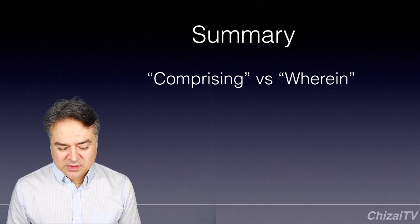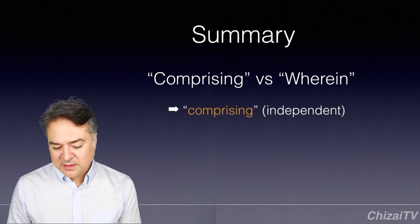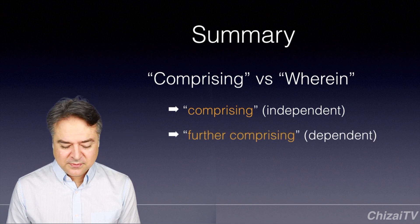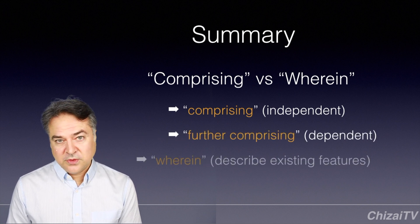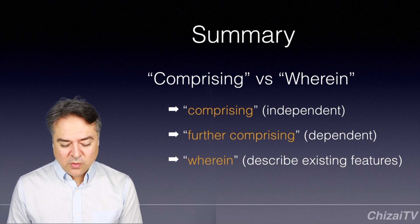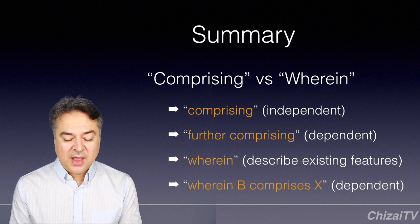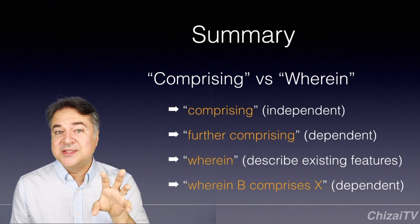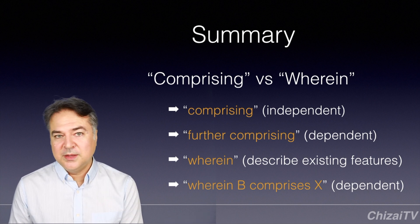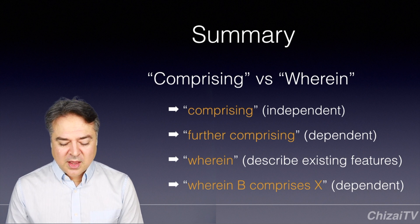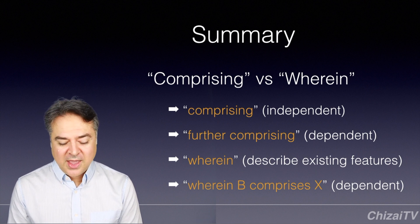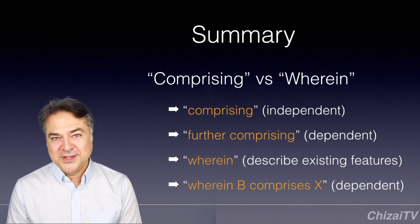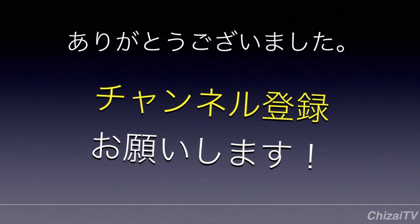To summarize this short video about comprising versus wherein: comprising is used for independent claims, but in the dependent claim, use further comprising. Wherein is for describing existing features. And 'wherein B comprises X' is a way to add additional elements to existing elements of your claim in a dependent claim. There are other things we can do and I may do later videos on this, but I hope this is helpful. I look forward to seeing you in the next video. Thank you.